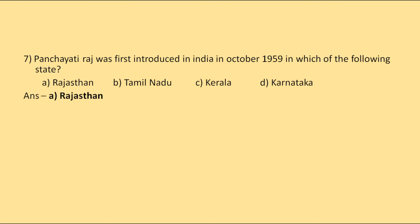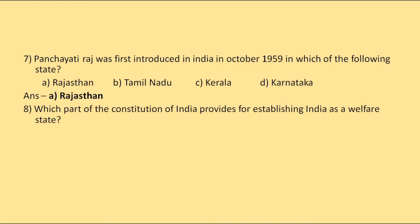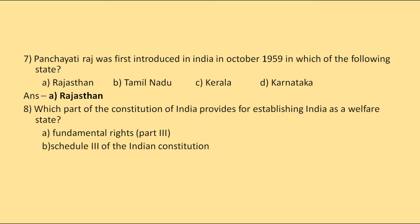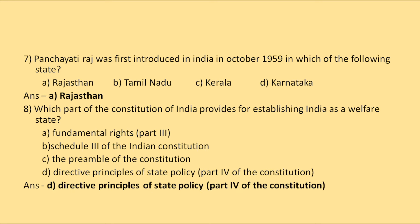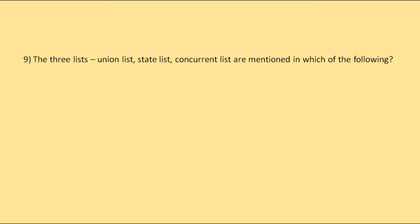Which part of the Constitution of India provides for establishing India as a welfare state? The options are Fundamental Rights Part 3, Schedule 3 of the Indian Constitution, the Preamble, or Directive Principles of State Policy Part 4. The correct answer is Directive Principles of State Policy, Part 4 of the Constitution.